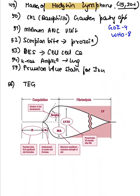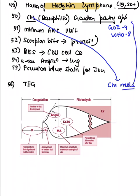For minimum ANC visits: if Government of India is asked, the answer is four; if WHO is asked, the answer is eight. For scorpion bite, the treatment is prazosin. Diethylstilbestrol (DES) causes clear cell carcinoma — remember 'CD' for clear cell and DES. KRAS amplification is seen in lung carcinoma. Prussian blue stain is done for iron.